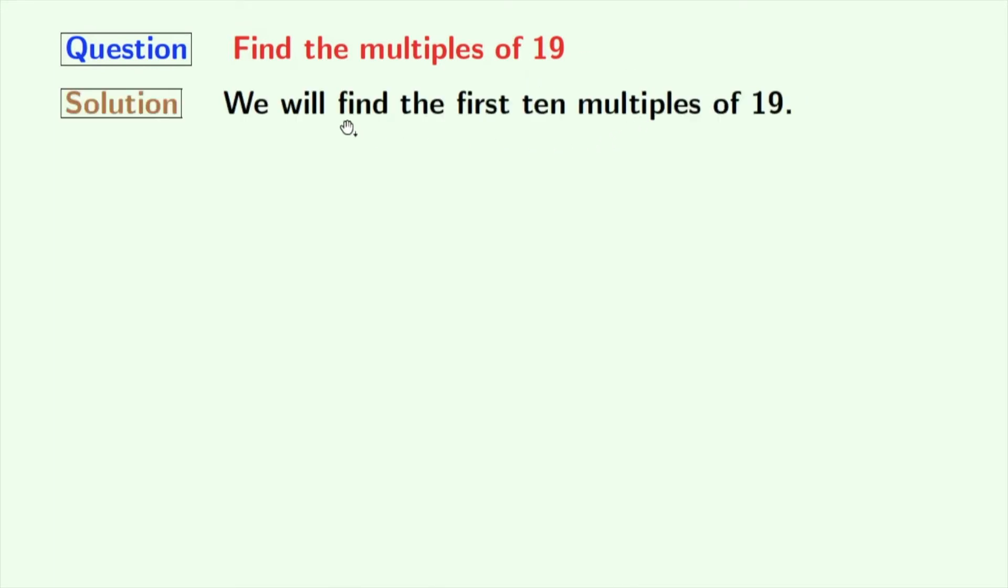We all know that the number of multiples of any number is infinite. So we will find only the first 10 multiples of 19. We will start our journey from 1.